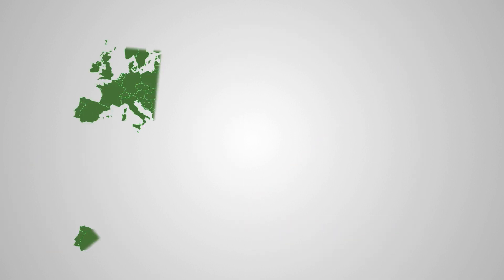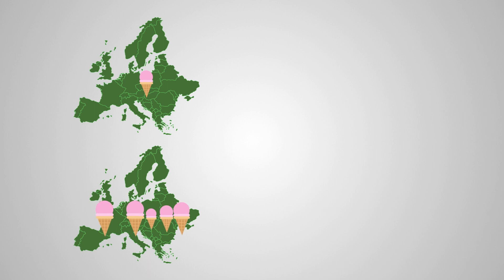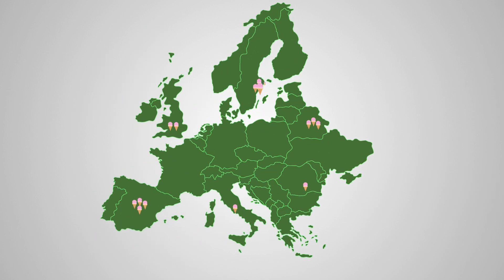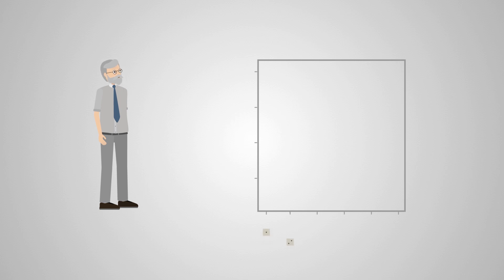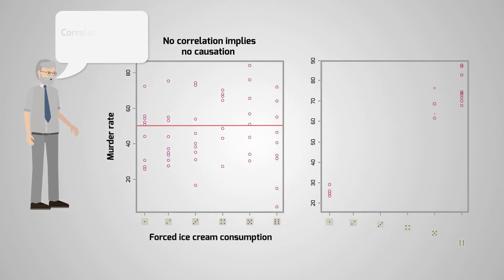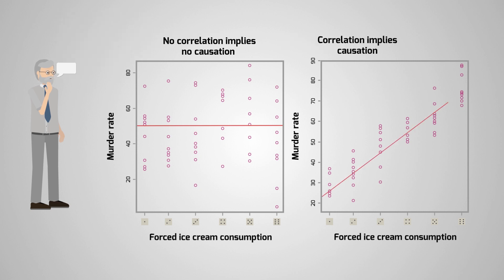In principle, we could test this. We could set ice cream consumption to a certain level in various cities with the roll of a die. Any connection between ice cream consumption and some hidden factor would be removed. So if ice cream doesn't cause murder, we'd expect to see no correlation between consumption and the murder rate in each city. However, if the correlation remained, this would be proof that ice cream consumption is a cause.